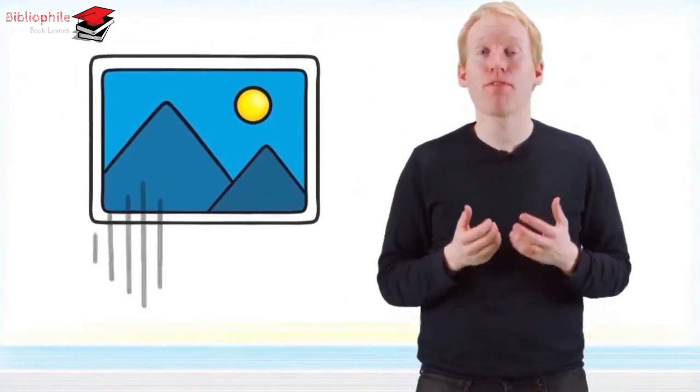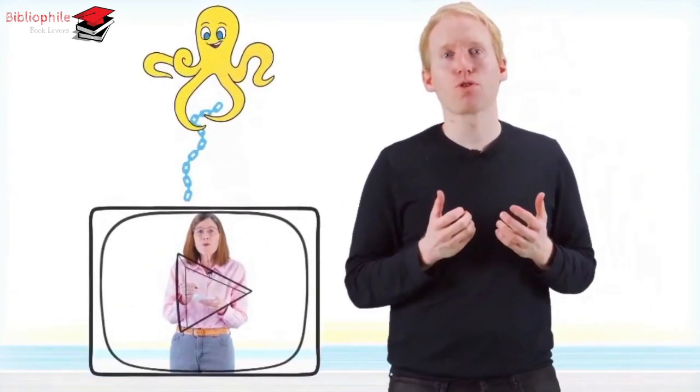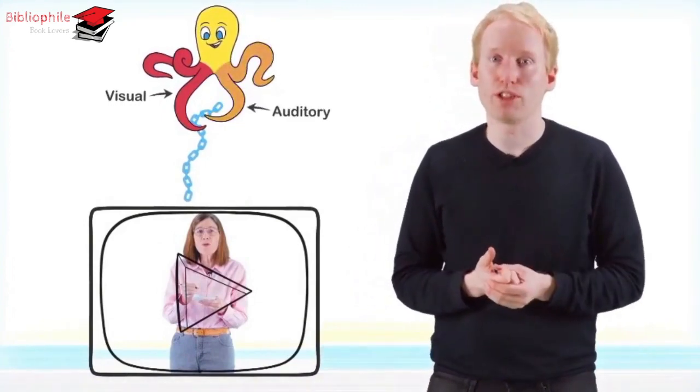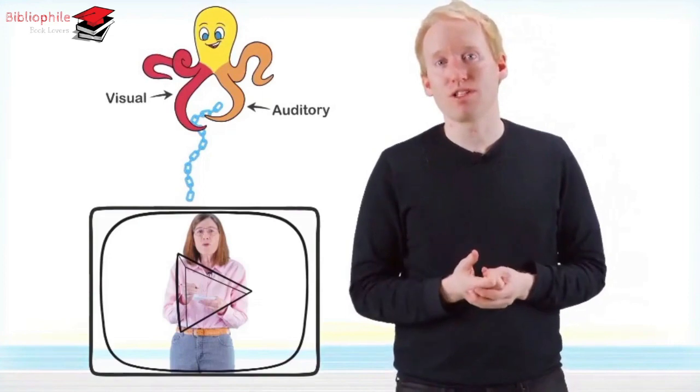Pictures accompanied by verbal explanations, such as the video you are watching right now, also makes learning easier for working memory. That's because some octopus arms are for visual information and others for auditory information. So you can hold more in mind at once.